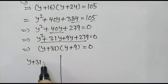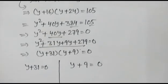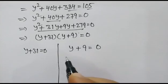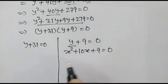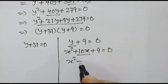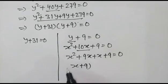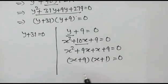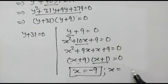Case 1: y+9 = 0. Since we assumed y = x²+10x, we get x²+10x+9 = 0. Factoring: x²+9x+x+9 = 0, giving (x+9)(x+1) = 0. So x = -9 and x = -1.